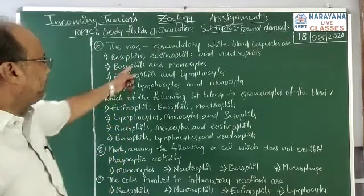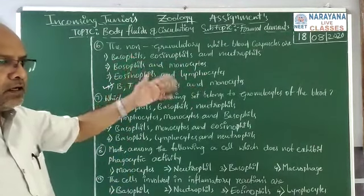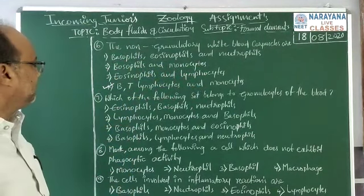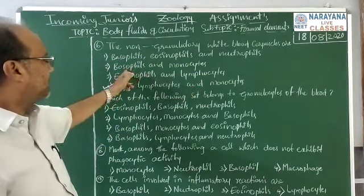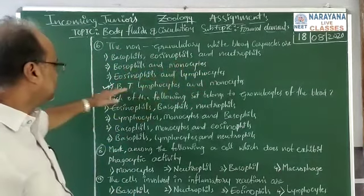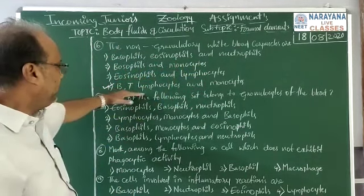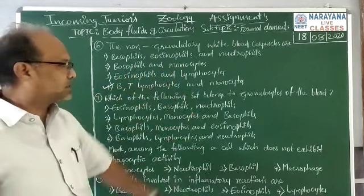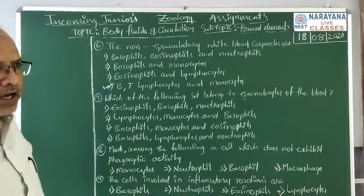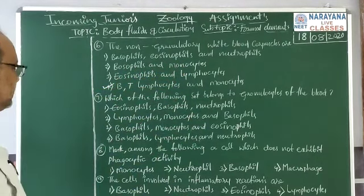Basophils, eosinophils, and neutrophils are granulocytes. Basophils and monocytes — basophils are granulocytes, not agranular. So the correct option is B and T lymphocytes and monocytes, which are agranulocytes.